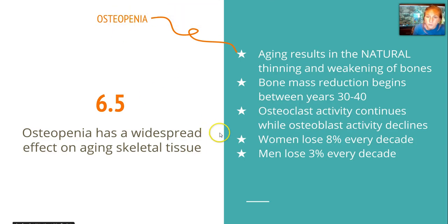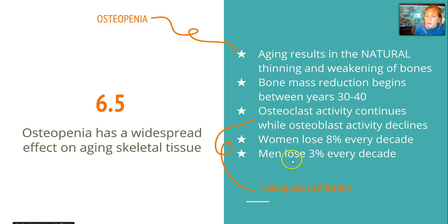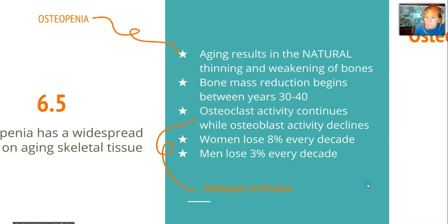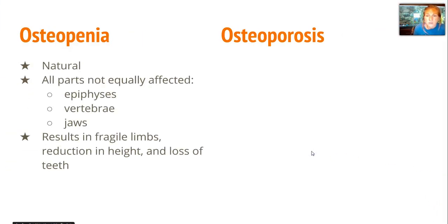Penia means lacking, osteo means bone. This reduction in bone begins between years 30 and 40 because osteoclast activity continues while osteoblast activity declines. We no longer have an adequate balance of ossification and therefore we have loss of bone. Women lose about 8% every decade while men only lose 3%.